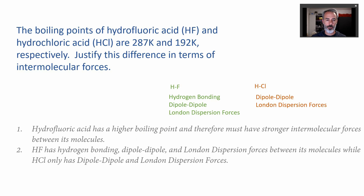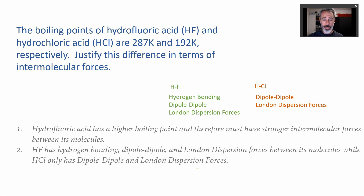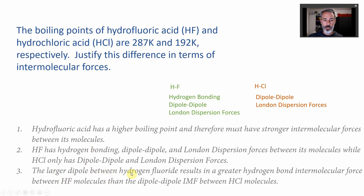Step two: dig into those intermolecular forces. 'HF has hydrogen bonding, dipole-dipole, and London dispersion forces between its molecules, while HCl only has dipole-dipole and London dispersion forces.' Talk about both of them — that's the second requirement. Step three: explain why HF has a higher boiling point. The larger dipole between hydrogen and fluorine results in a greater hydrogen bond intermolecular force between HF molecules than the dipole-dipole intermolecular force between HCl molecules.